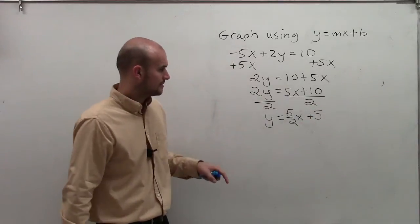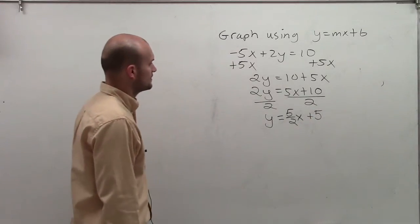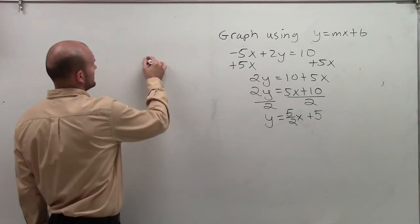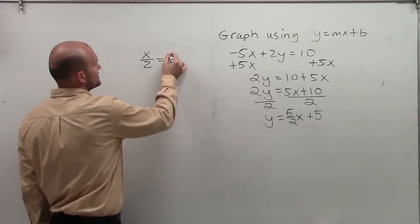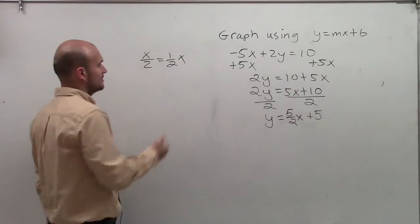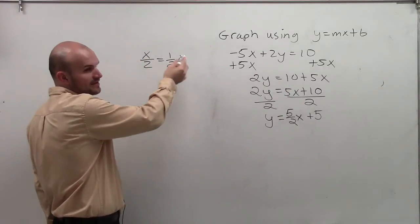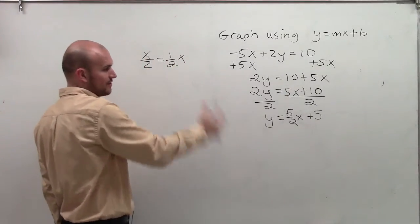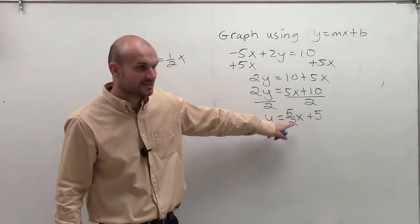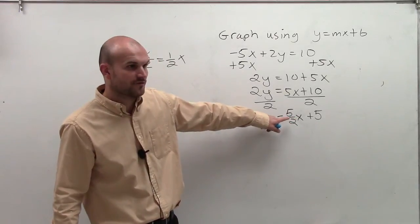Think about it this way. x divided by 2 is equal to 1 half x. 8 divided by 2 is the same thing as 1 half times 8. So that's why I wrote the fraction in front. So now you can see it's in that format.